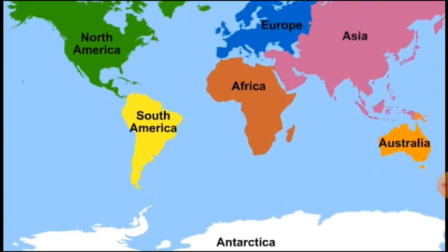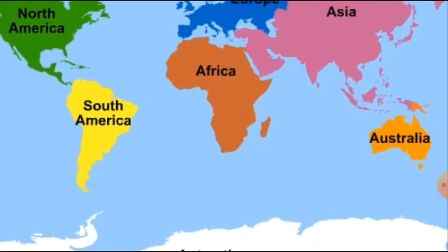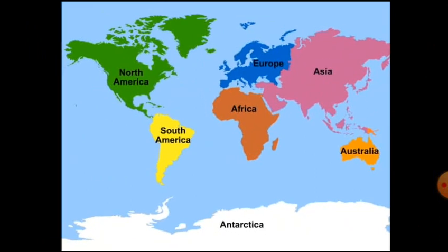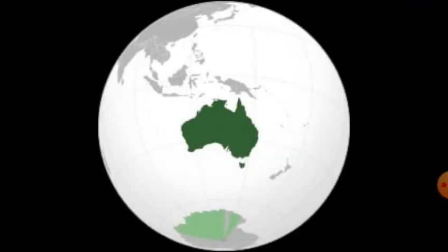Moving on to Australia. Australia is the smallest continent and lies entirely in the southern hemisphere. Australia is surrounded on all sides by the oceans and the seas. It is called an island continent.